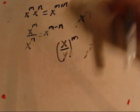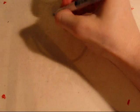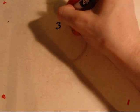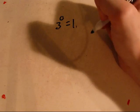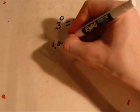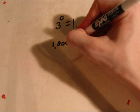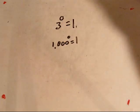Also know that any time you have a number, let's say 3 to the zeroth power, it's going to be 1. If it's 1,000 to the zero power, it's going to be 1. Anything to the zero power is equal to 1.